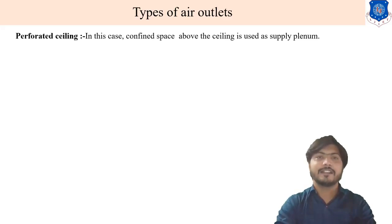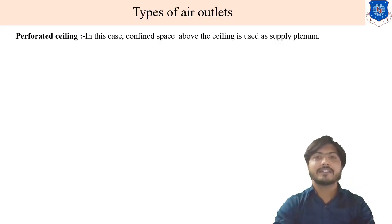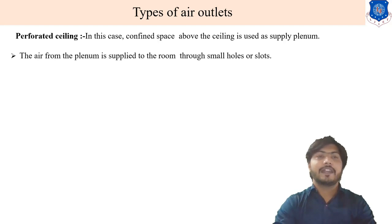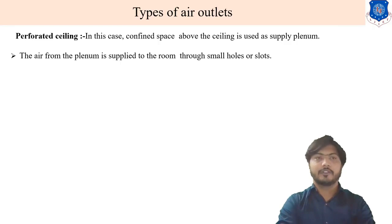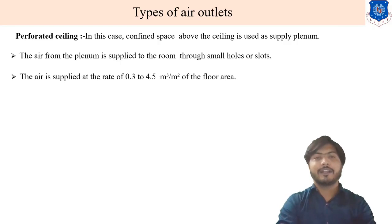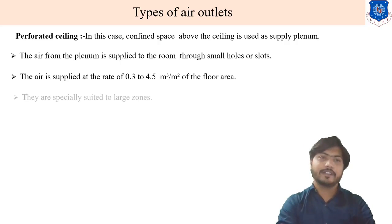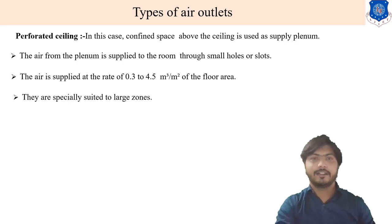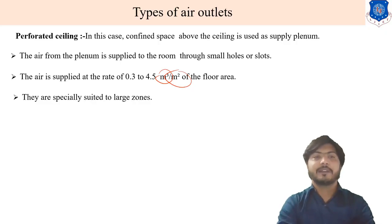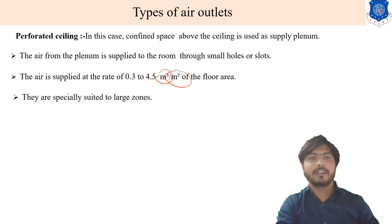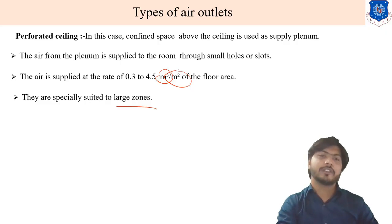Next is perforated ceiling. In this case, the confined space above the ceiling is used as a supply plenum. The air from the plenum is supplied to the room through small holes or slots. The air is supplied at the rate of 0.3 to 4.5 cubic meters per minute per square meter of floor area. They are specially suited for large zones.